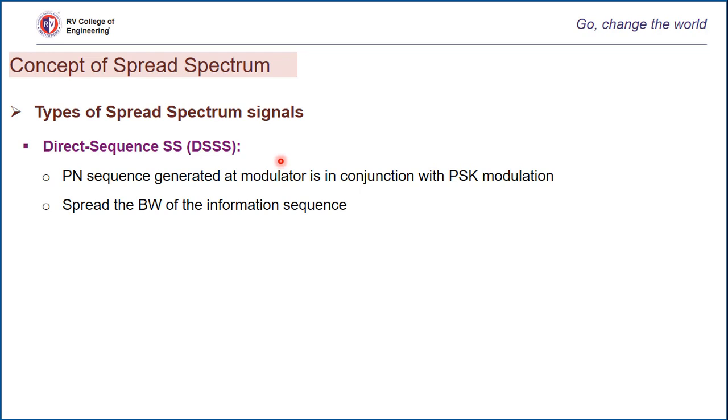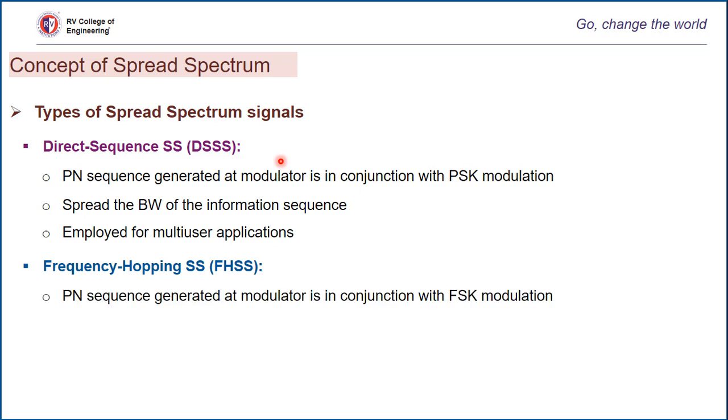However, when used in conjunction with binary FSK or M-ary FSK, the pseudorandom sequence selects the frequency of the transmitted signal pseudorandomly, and hence it is called Frequency Hopping Spread Spectrum technique.